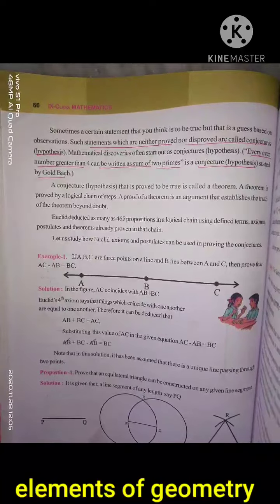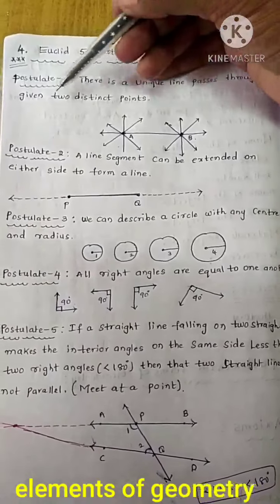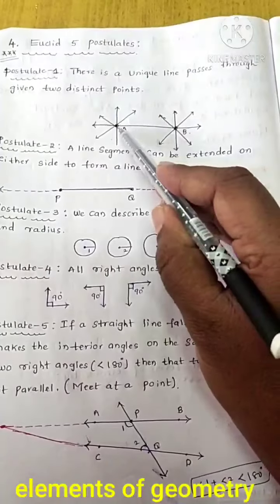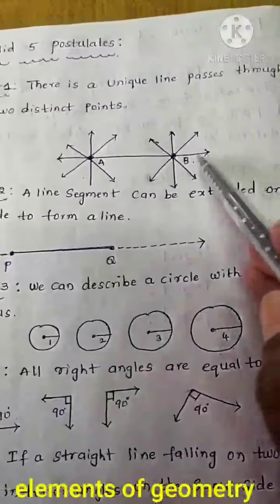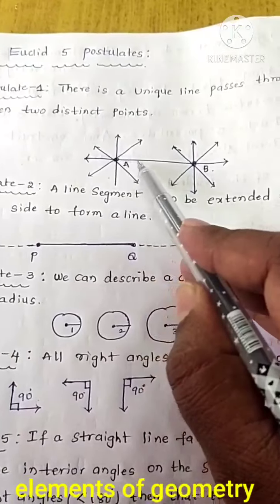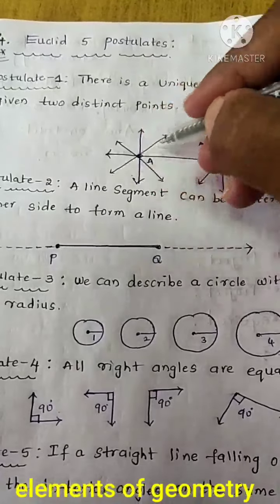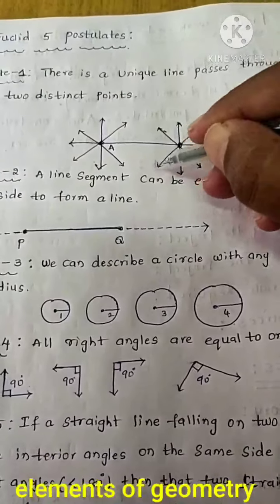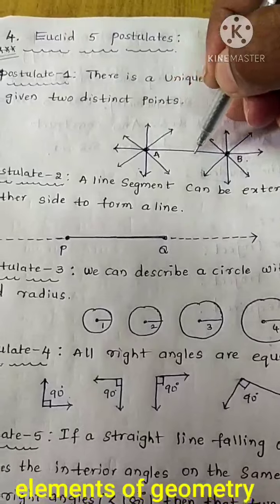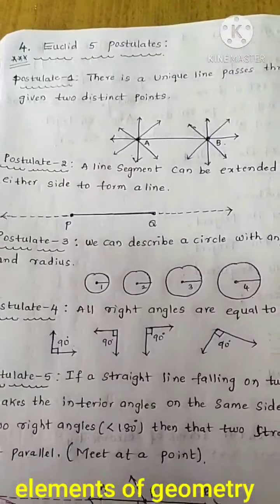Now I am explaining Euclid's five postulates. Postulate 1: there is a unique line that passes through any two given distinct points. For example, A and B are two distinct points — at point A we can draw many lines, at point B we can draw many lines, but through these two distinct points only one straight line passes. This is Postulate 1.